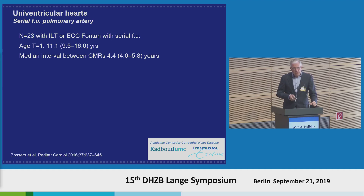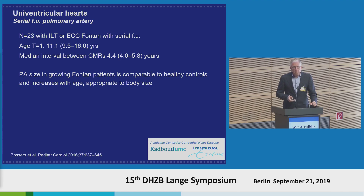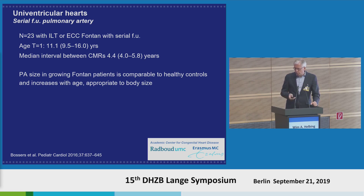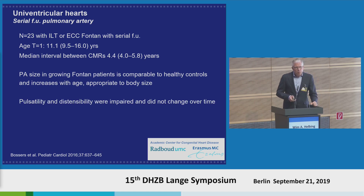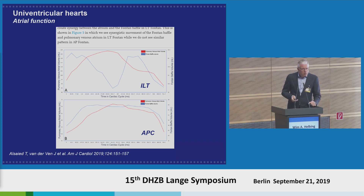Another source of problems in the Fontan circulation may be the pulmonary artery. There is not much data on the growth of the pulmonary artery in these patient groups, apart from some older studies using CT data. When we used MRI and looked at five-year follow-up, we noted adequate growth appropriate to body size. Of course, there is a highly abnormal flow pattern in these pulmonary arteries — pulsatility and distensibility are highly abnormal — but we did not see any serial changes. Yet this abnormal pulsatility and distensibility may be a problem in the very long run, since it may influence endothelial function.